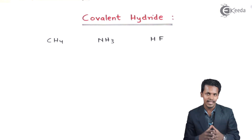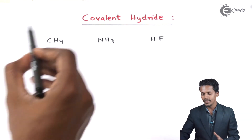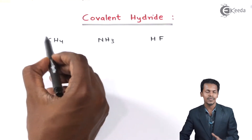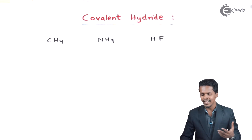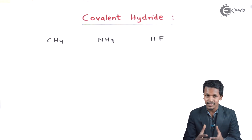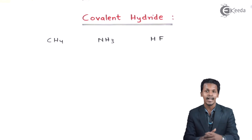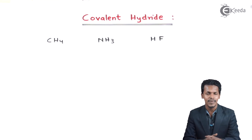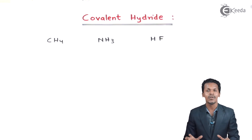They are called covalent hydrates depending on the bond they form and the element to which they are combining. CH4, NH3, and HF are basically volatile substances, unlike ionic hydrates. Ionic hydrates are in a solid state, but covalent hydrates are basically of the gaseous form.